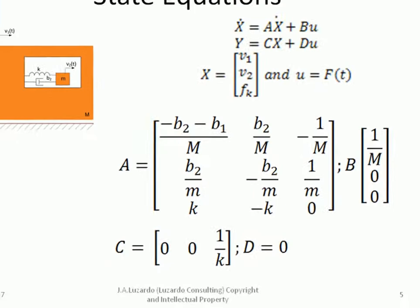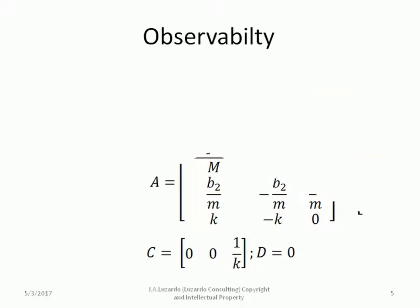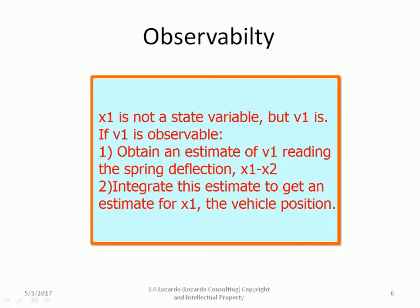In the following slide, we will determine a very important characteristic of this system. Since we are interested in the vehicle position x1 and the only thing we can measure is the deflection of the spring, we should determine the observability of the system. x1 is not a state variable, but V1 is.